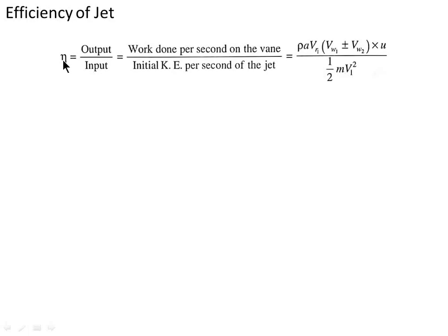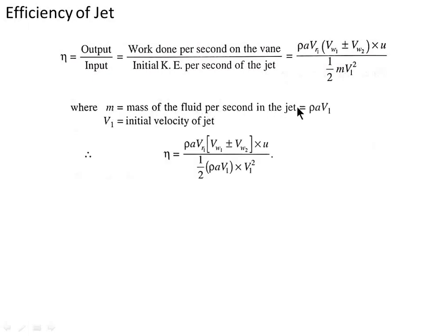Finally, efficiency of the jet is output divided by input — work done per second on the vane divided by initial kinetic energy per second of the jet. Efficiency eta equals rho A Vr1 (Vw1 ± Vw2) U divided by half of m V1², where m equals rho A V1. Substituting, eta equals rho A Vr1 (Vw1 ± Vw2) U divided by half rho A V1³.